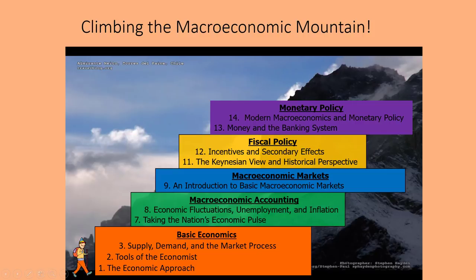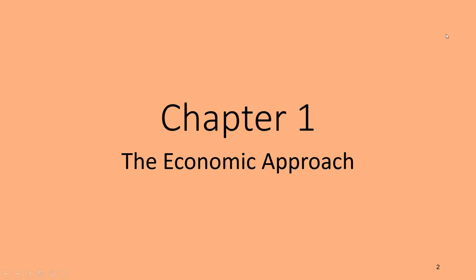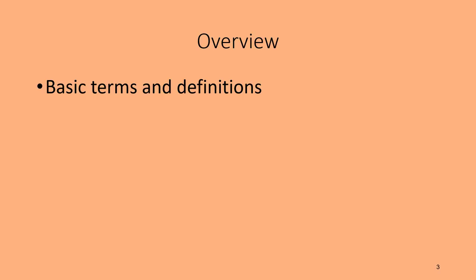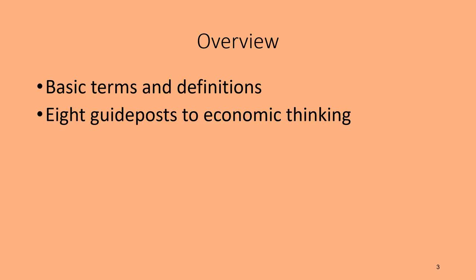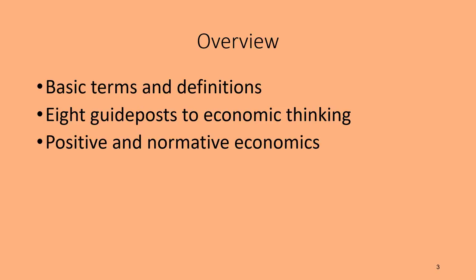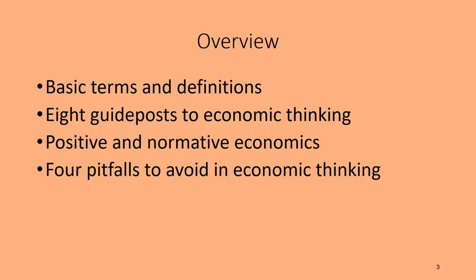So let's get started with basic economics, starting with Chapter 1: The Economic Approach. In this chapter we're going to cover some basic philosophy of economics that makes economists who they are. Here's a quick overview: first, some basic terms and definitions; then the eight guideposts to economic thinking — the eight pillars of thought that make economists see the world differently; then the difference between positive and normative economics; and finally, four pitfalls to avoid in economic thinking.